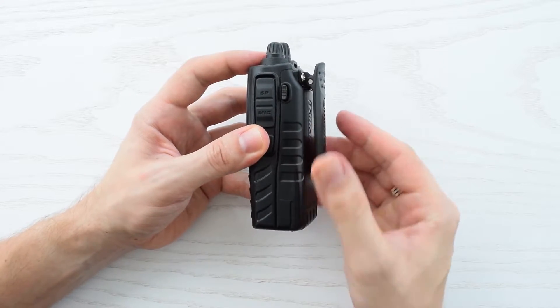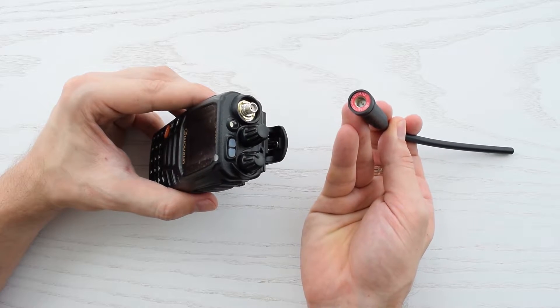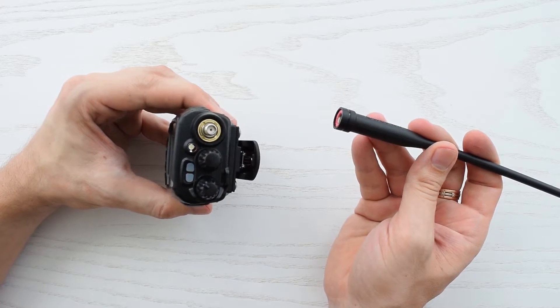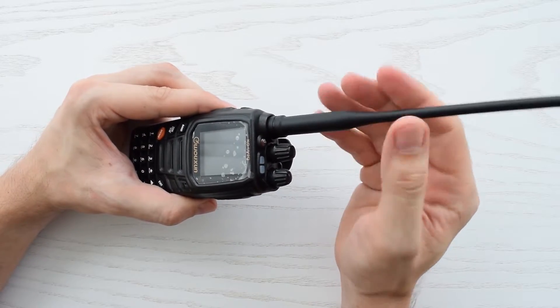Feels pretty sturdy. And finally, let's attach the antenna. It has SMA male connector and SMA female connector on the radio. Voxon also offers a dual-band stubby antenna.